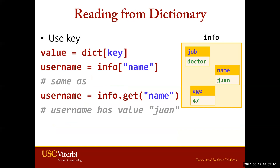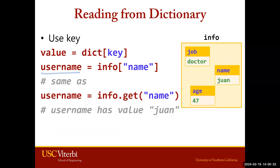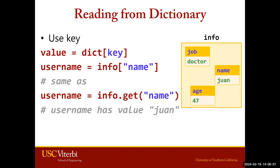You can access information within your dictionary in a couple of ways. The first way: provide the dictionary name and within the brackets provide the key. So with the info dictionary and key name, the value Juan will be returned, so username will be Juan. Another way is to use the get method — call your dictionary with .get() and then within the parentheses give it a key. Providing the key name again returns Juan. Both methods allow us to access the value given the key. The takeaway is that we're using keys to access information within our dictionary.